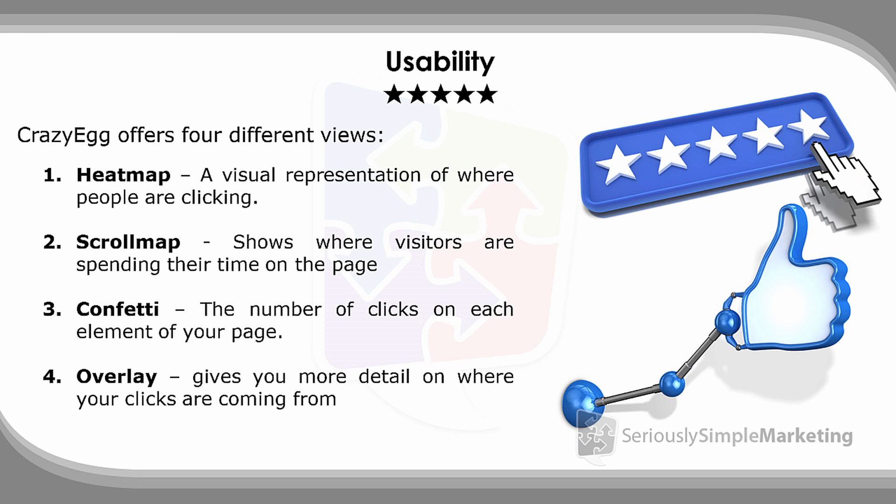Let's talk about usability first. Crazy Egg offers four different views: a heat map view, a scroll map view, what they call a confetti view, and what they call overlay. Because there are so many different views, we're giving this five stars for usability. We primarily use heat map and scroll map; on rare occasions we'll use confetti and overlay, finding that data in other sources like Google Analytics or Visual Website Optimizer.